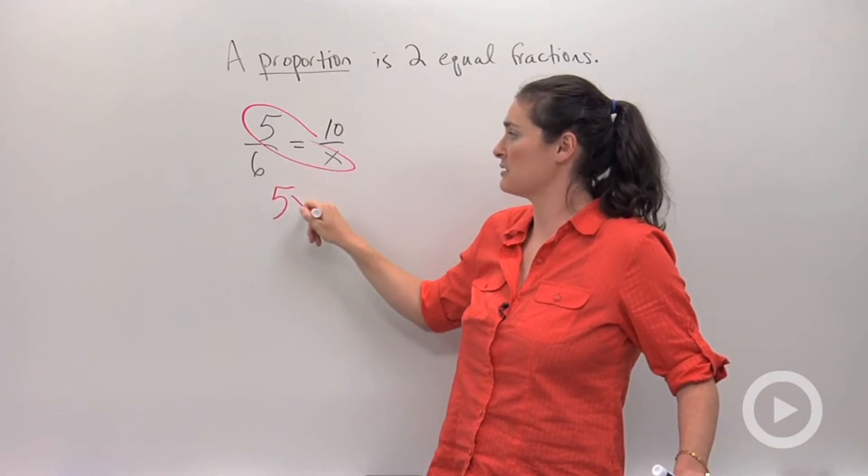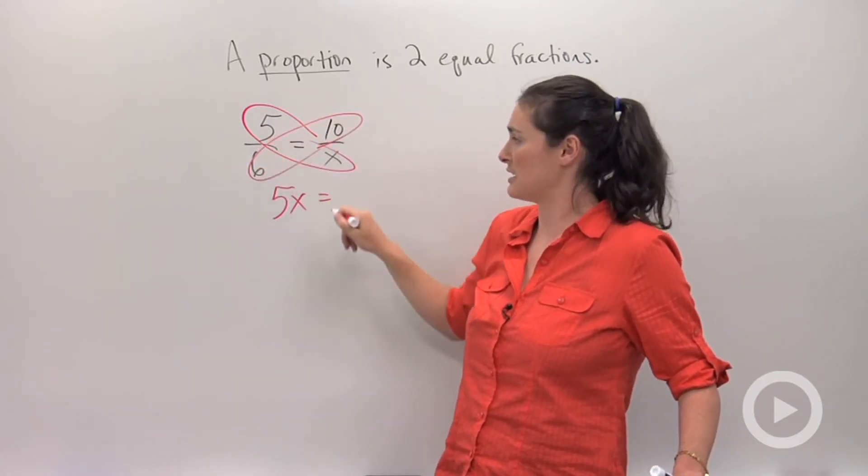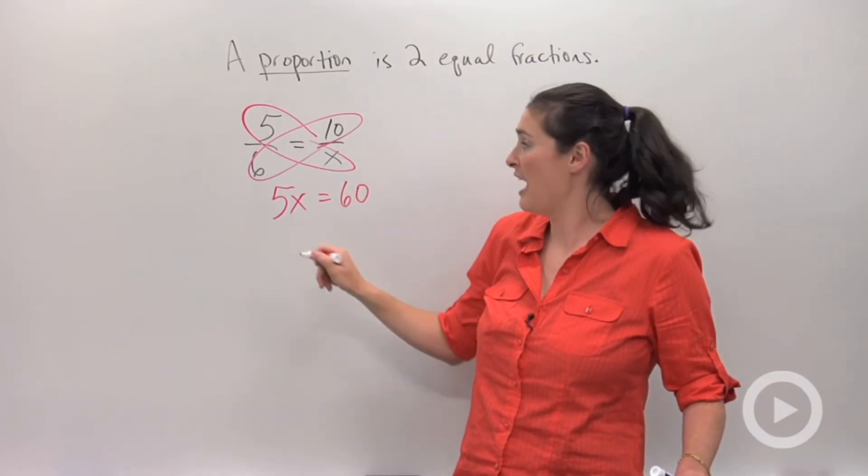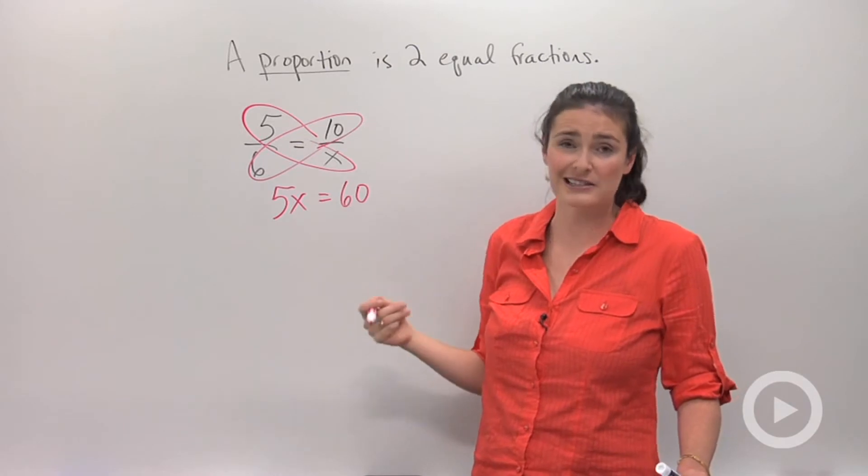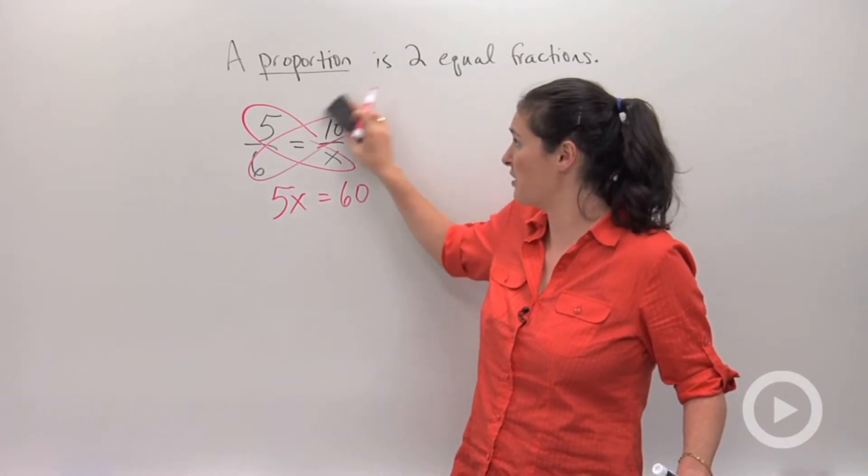5 times x, that's my first product, is going to be equal to 6 times 10. And you can kind of do in your head how this would give you the answer x equals 12. So cross-multiplying is another good technique for solving proportions.